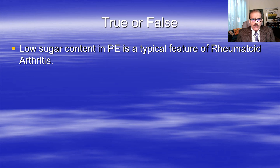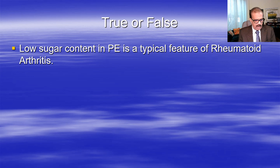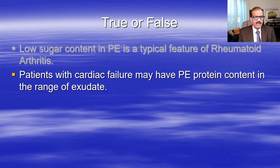Low sugar content in pleural effusion is a typical feature of rheumatoid arthritis. You may be wondering what is the relevance of sugar with rheumatoid arthritis - typically low sugar is a feature of bacterial infection. But in rheumatoid arthritis-related pleural effusion, glucose contents are indeed reduced. You always have to compare glucose content of any body fluid with the plasma glucose.